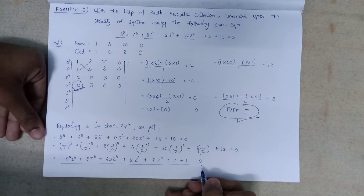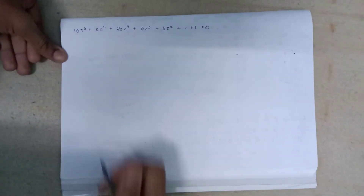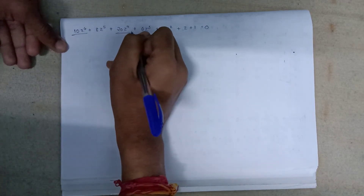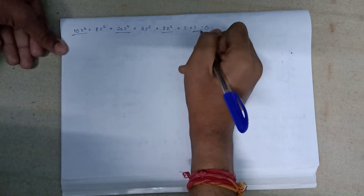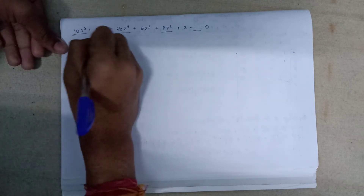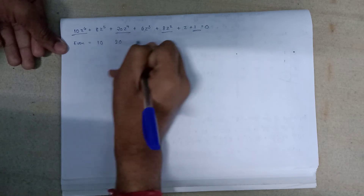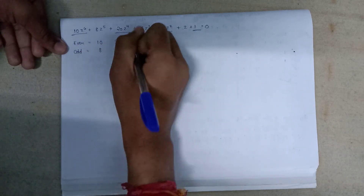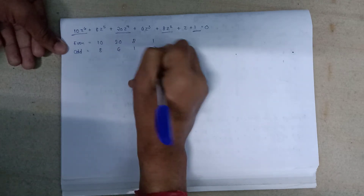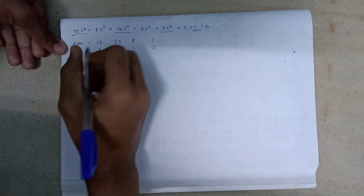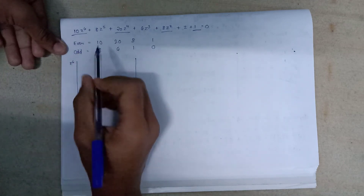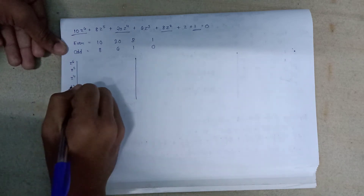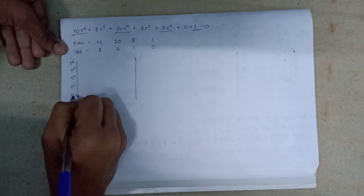This is our new characteristic equation. We need to form a new Routh array and check stability. The even powers of z are z⁶, z⁴, z², z⁰, giving even coefficients 10, 20, 8, 1. The odd coefficients are 8, 6, 1, 0. The array rows go from z⁶ down to z⁰.